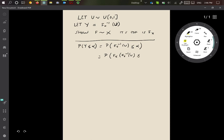is less than or equal to F_X of alpha, and this is nothing more than probability that U is less than or equal to F_X of alpha.